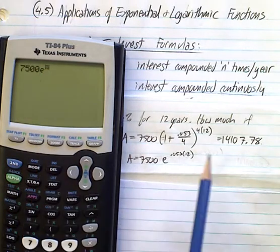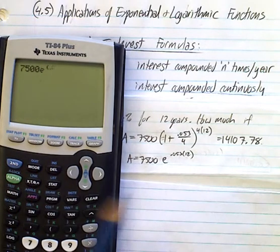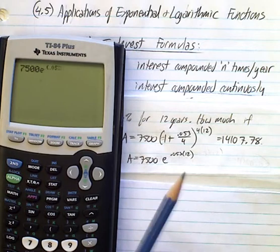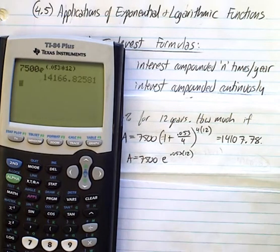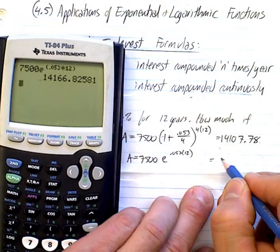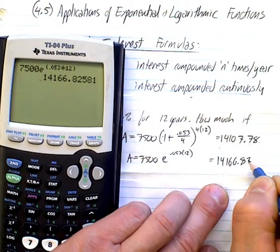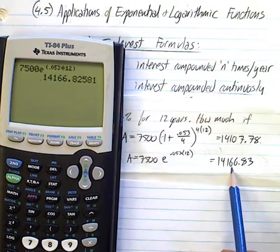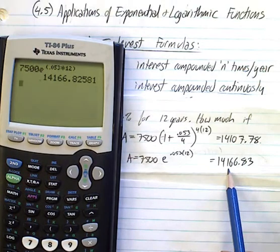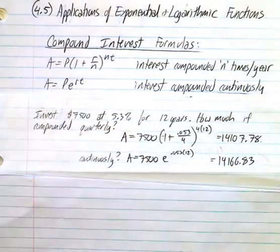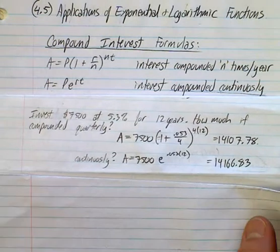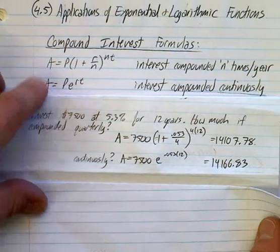The rate is 0.053, and you're doing it for 12 years. Nothing could be simpler in this case. All we're doing is using our calculators. Notice that the E has an exponent. So, E to the power of 0.053 times 12. And I get an answer that is going to be a little bit more than what we had over there because we are compounding it more often. So, you can see that there's a difference in money, in earnings. So, that is compound interest.